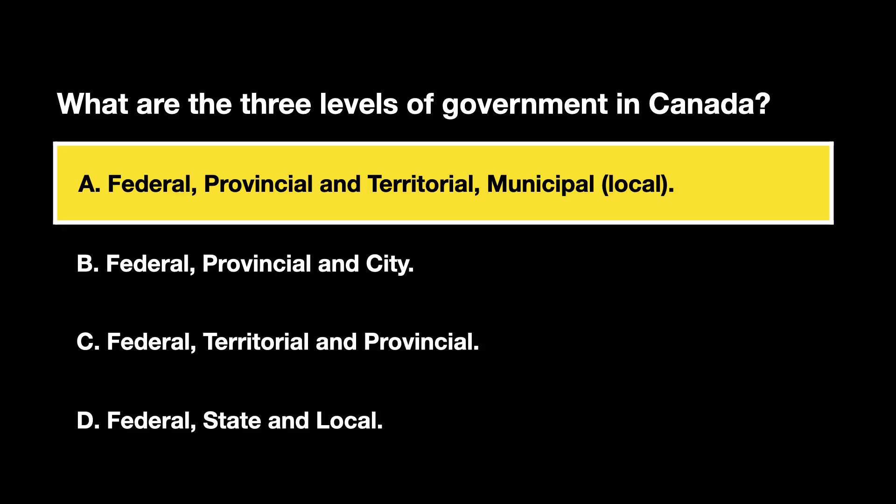The three levels of government in Canada are the federal government, which governs the entire country, the provincial and territorial governments, which govern specific provinces and territories, and the municipal local governments, which govern cities, towns, and other local areas.